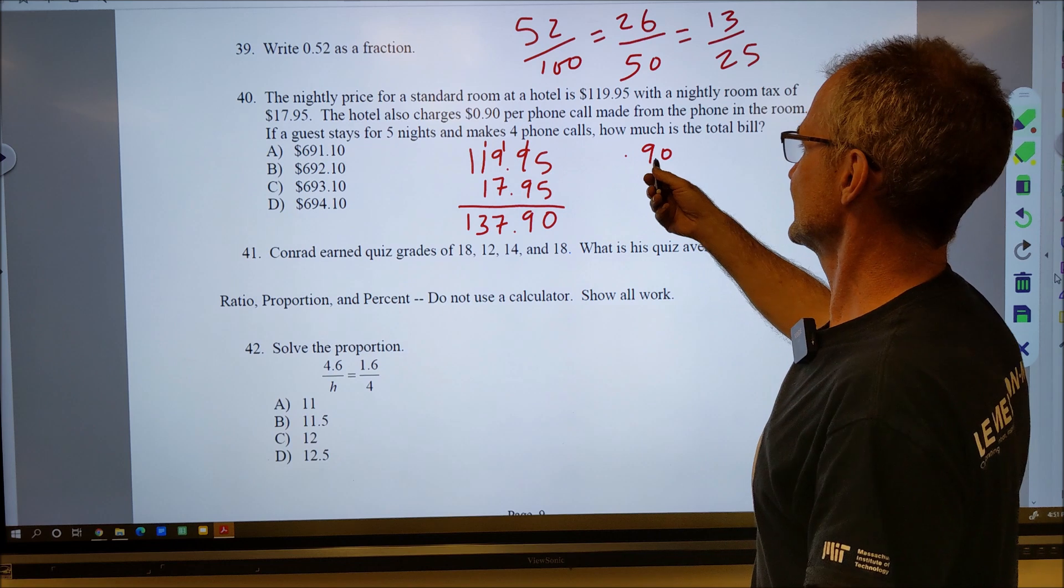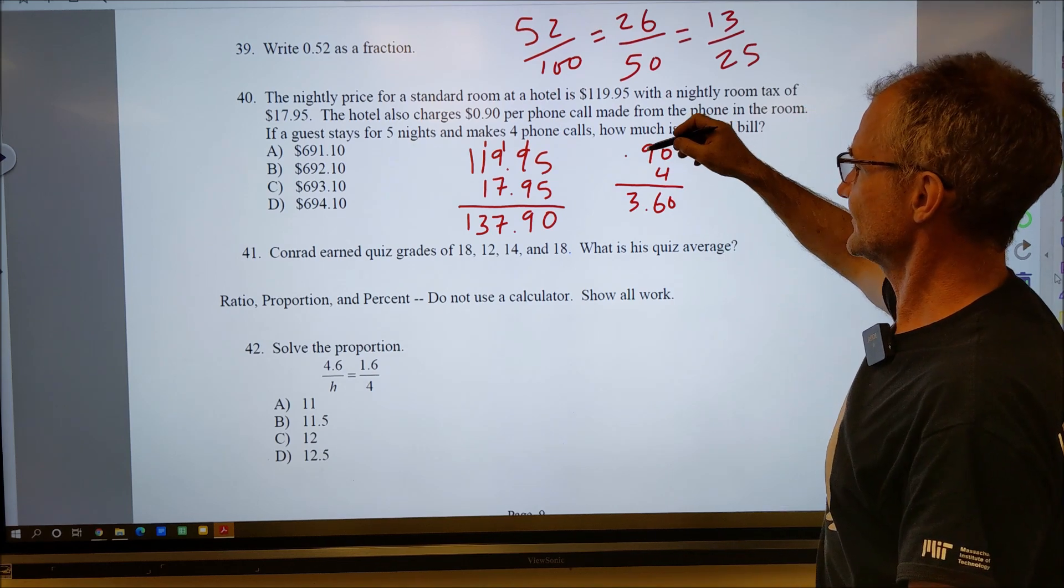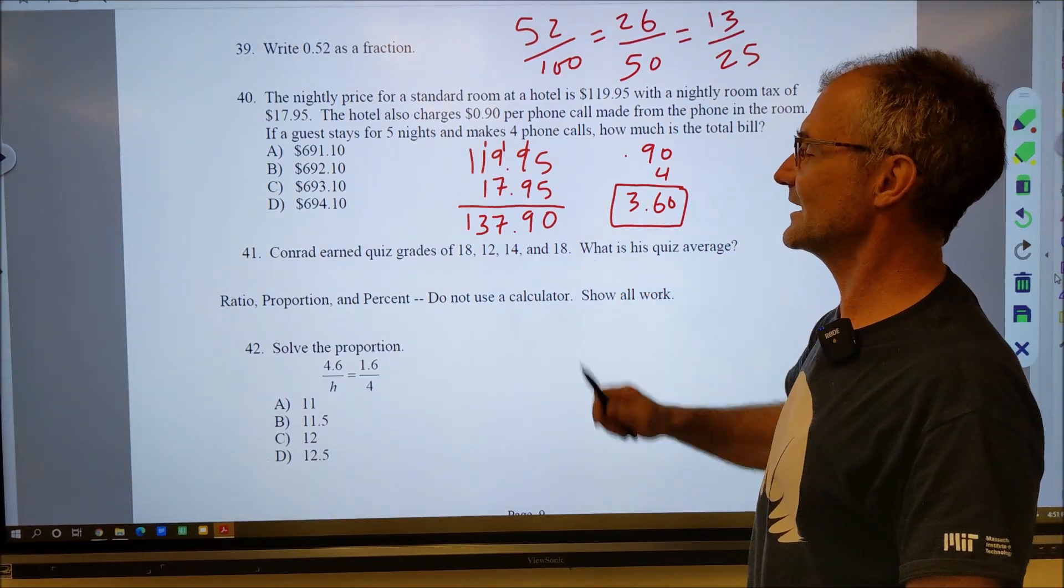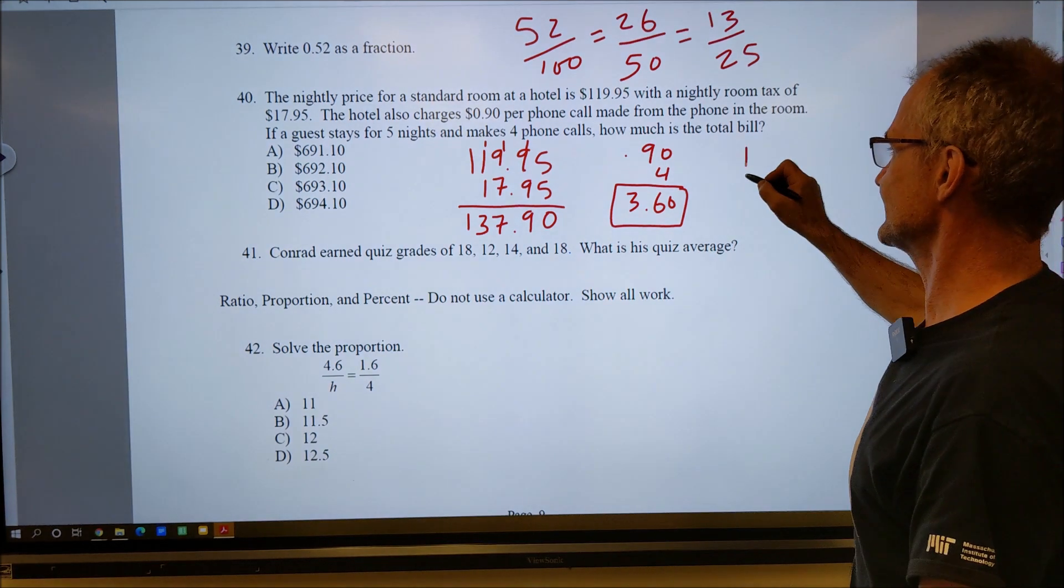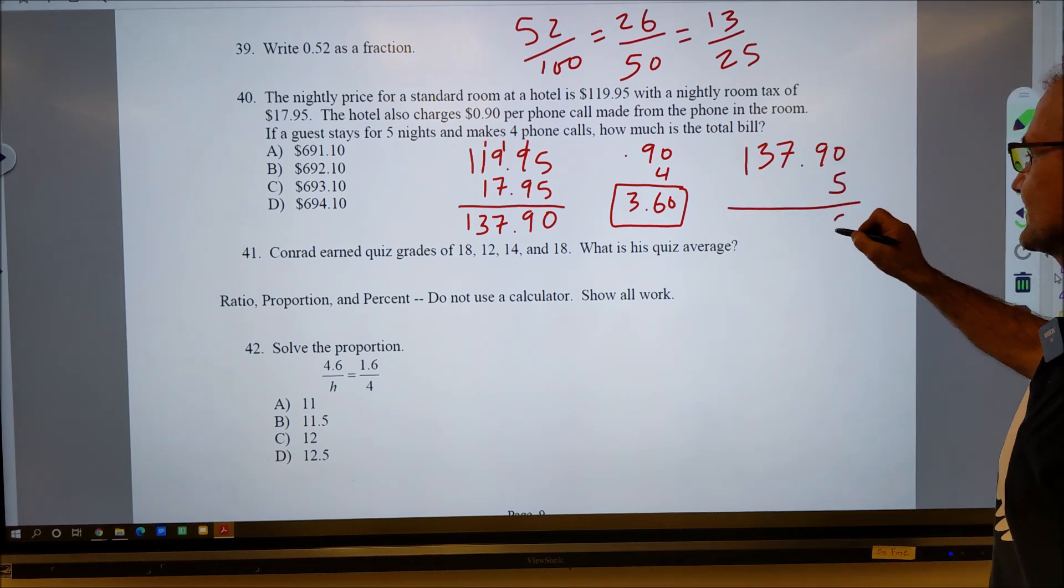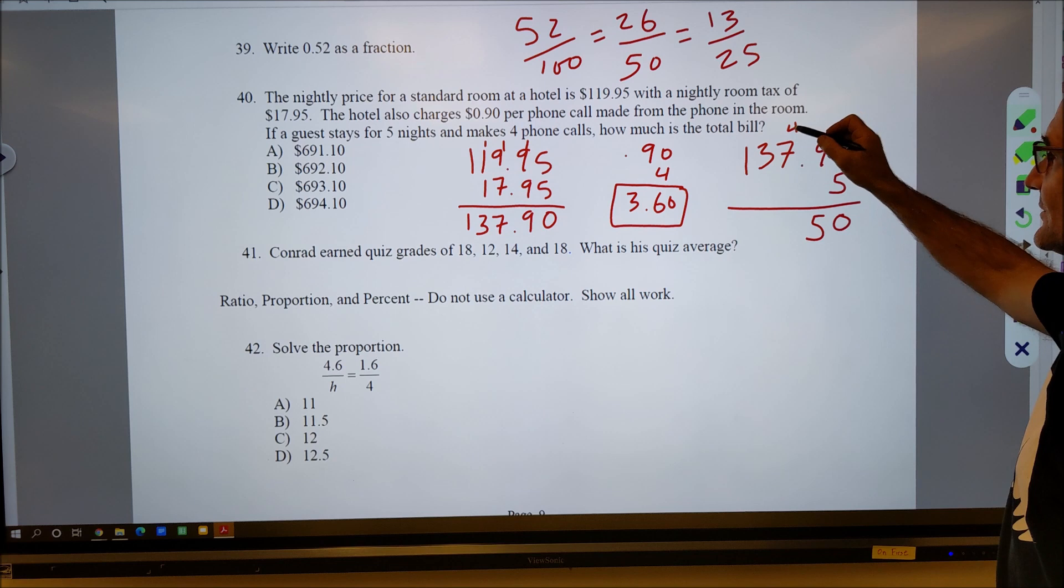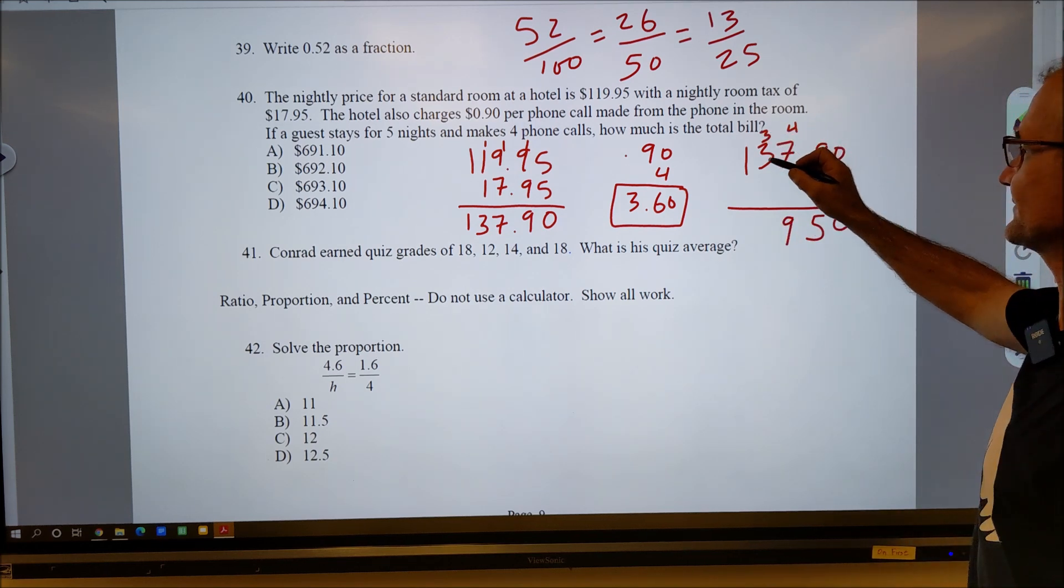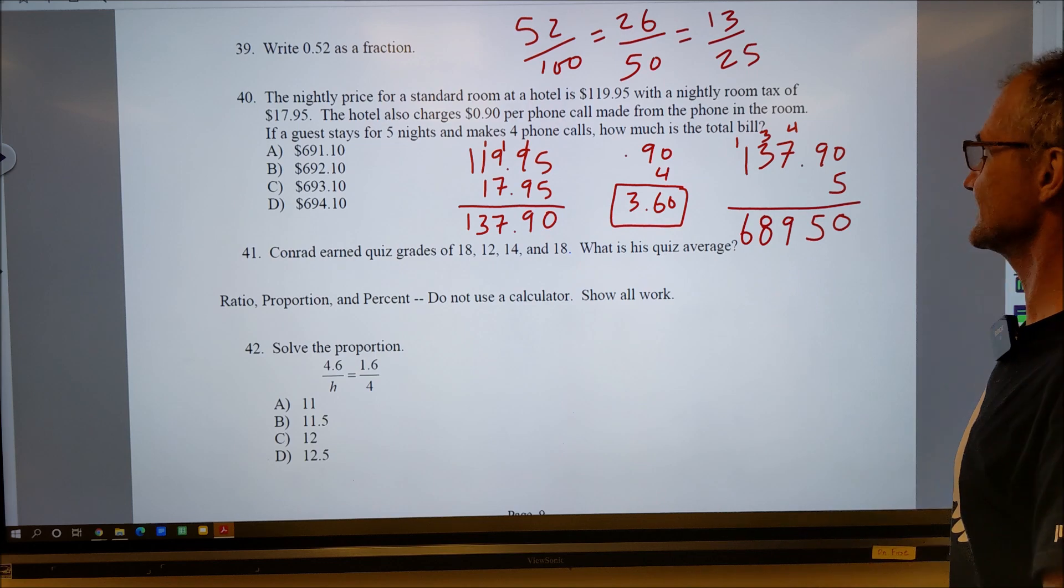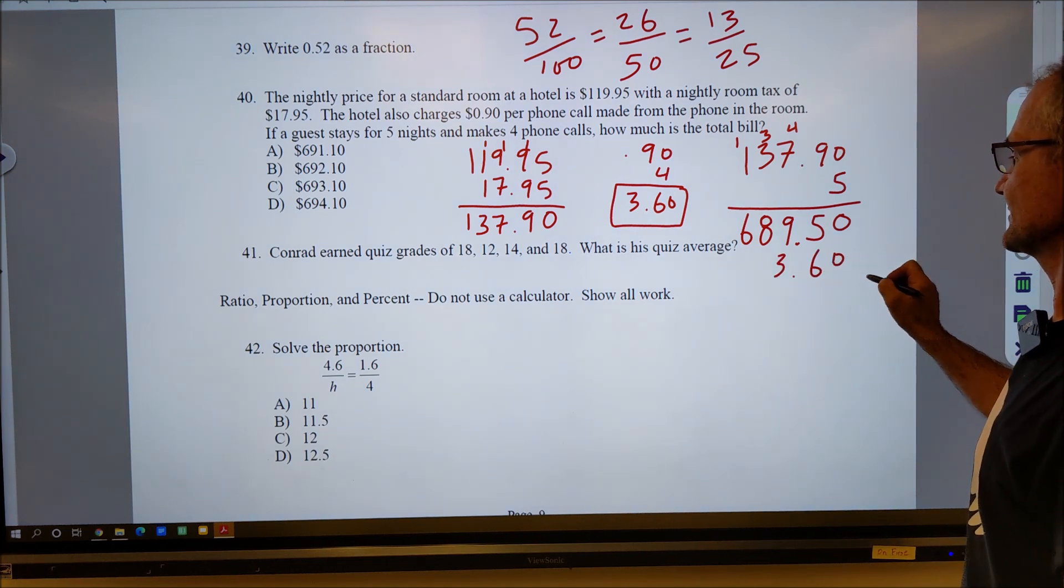So it's $137.90 per night times the five nights. And then four phone calls at 90 cents will be $3.60, right? Nine times four, 36, and I got two decimal places. So this is the total price of phone calls, and then this times five will be the cost of the hotel room. I don't know if there's an easy way to do it or just do the multiplication out. 137.90 times the five nights: five times zero, five times nine, 45, carry the four, five times seven, 35, plus the four, 39, carry the three, 15 and three, 18, carry the one, five plus one, six. 689.50 for five nights, that's about right.